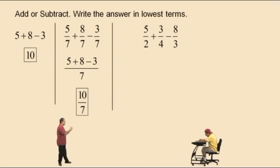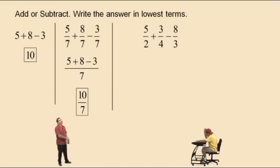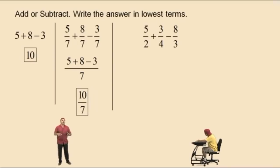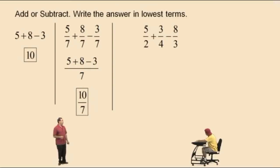Notice our denominators are different. We have a 2, a 4, and a 3. Now what do we have to do, Charlie? Find the LCD. Find the LCD — the LCD is the lowest common denominator, so we can think of it as the smallest number that all your denominators divide evenly into. So Charlie, what's the smallest number that a 2, a 4, and a 3 divide evenly into? 12.